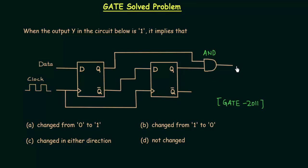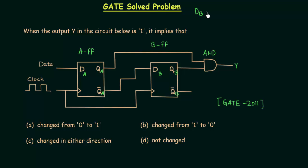The output of this AND gate is Y, which is the output of this sequential circuit. The first D flip-flop is called flip-flop A and the second D flip-flop is flip-flop B. The input of the first flip-flop is DA and its two outputs are QA and QA complement. Similarly, the input of the second flip-flop is DB and its outputs are QB and QB complement. Note that DB equals QA complement, and DA is the data input. The output Y equals QA AND QB.